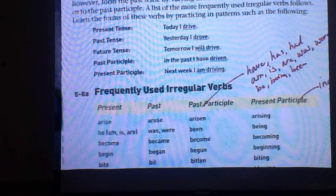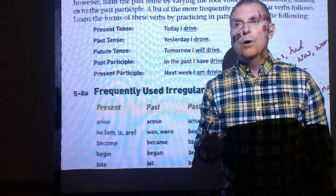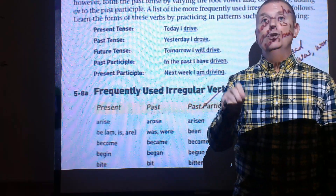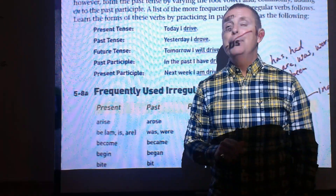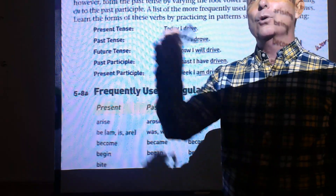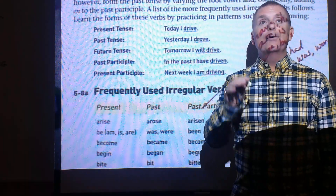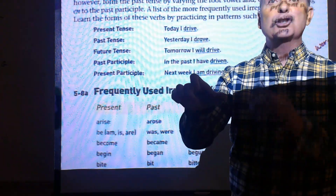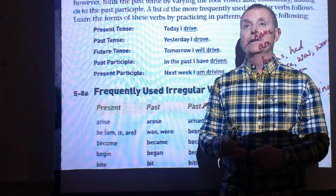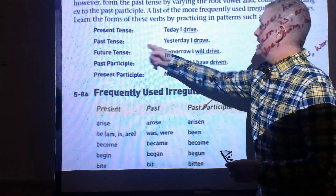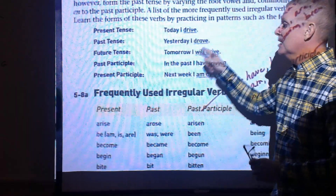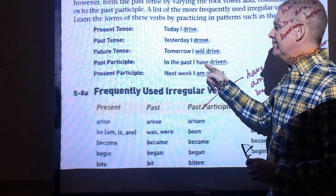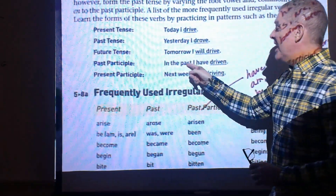Next: irregular verbs. A regular verb forms its past tense with -d or -ed — 'jump' becomes 'jumped.' The irregular verb completely changes its spelling. For example, 'drive' — present: 'I drive'; past: 'I drove'; future: 'I will drive'; past participle with have/has/had: 'I have driven.'